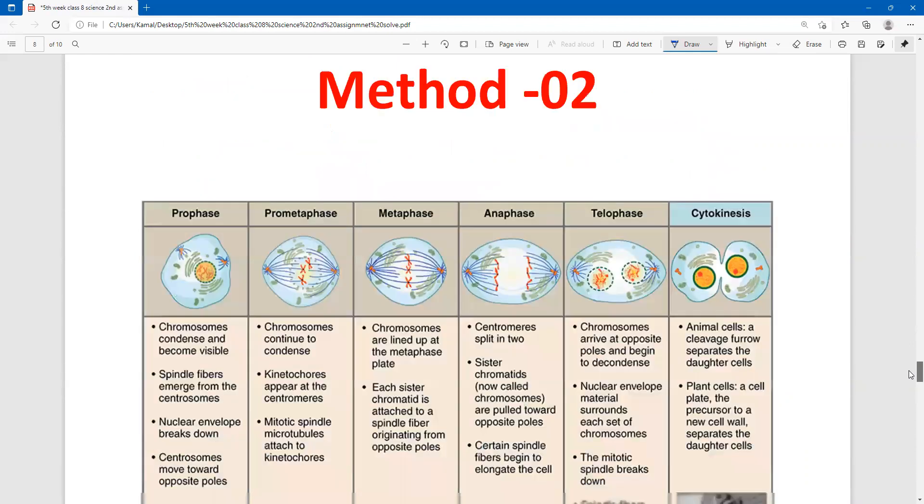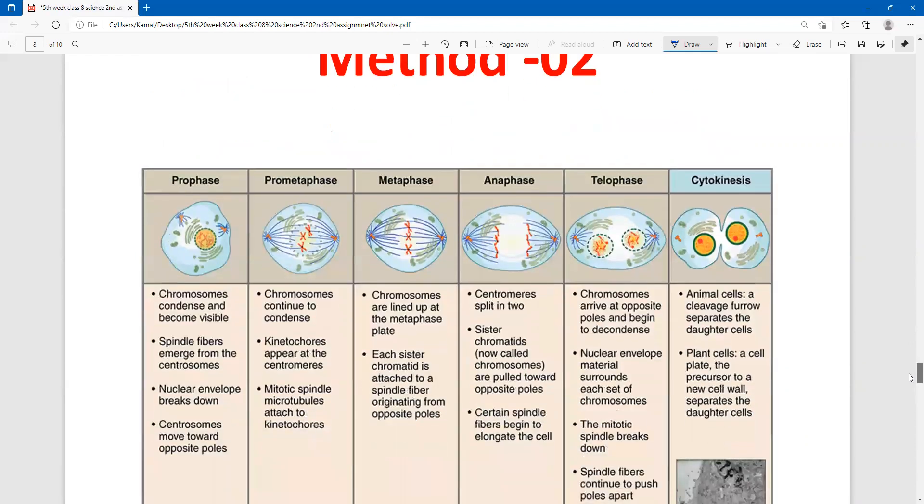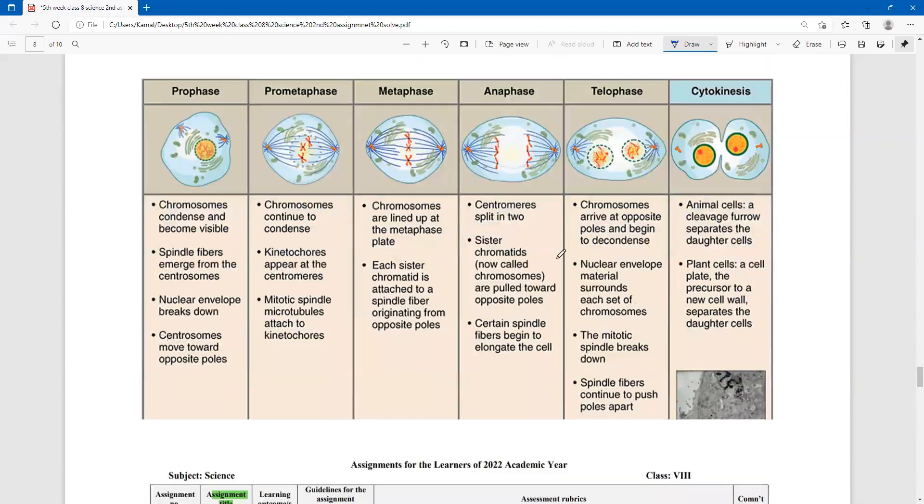And there is another method in shortcut way. You can write down here. Prophase, prometaphase, metaphase, anaphase, telophase, and cytokinesis. The pictures are given here. And characteristics are given here point by point, like point one, two, three, four. This is the shortcut method. You can write any method, no problem. I hope you will get the maximum number.